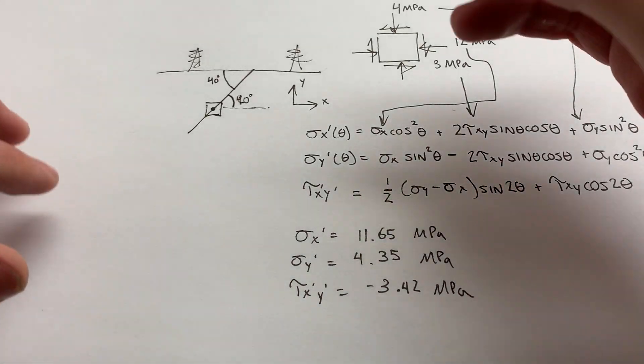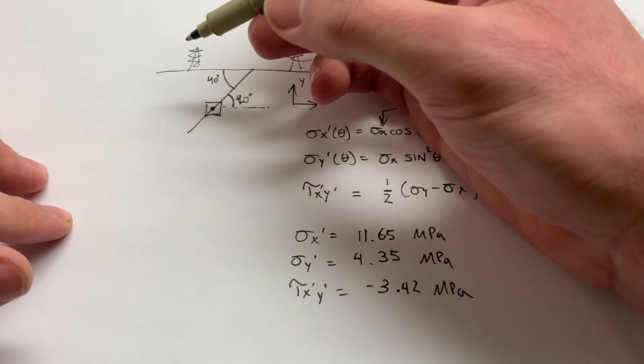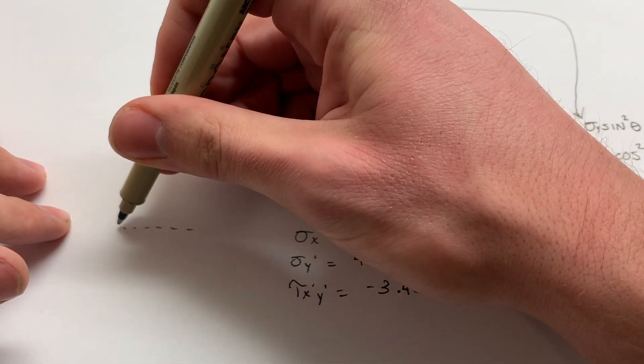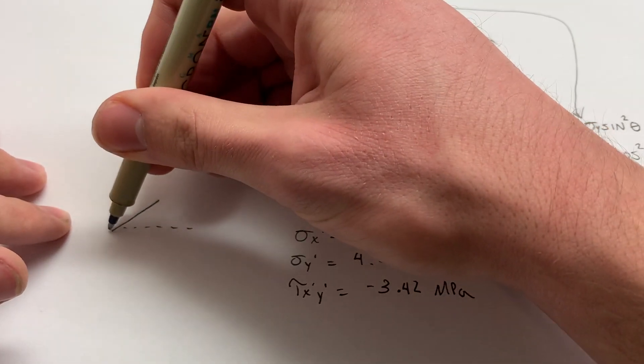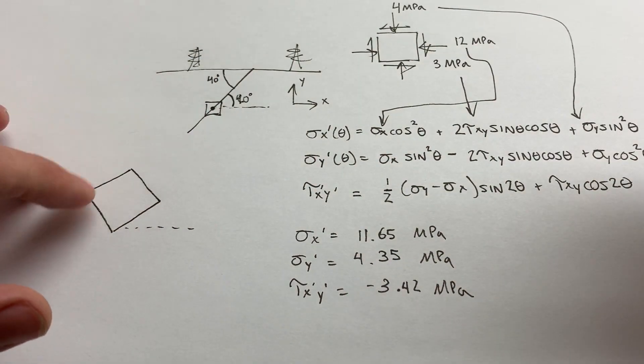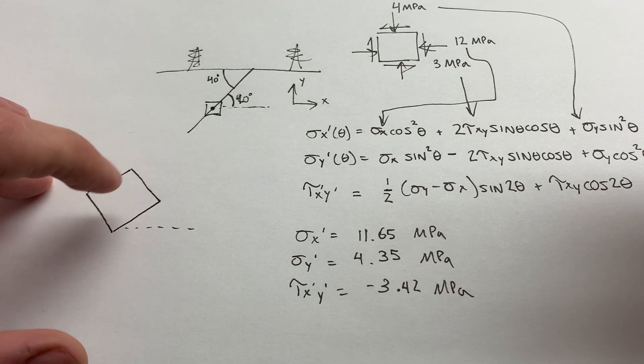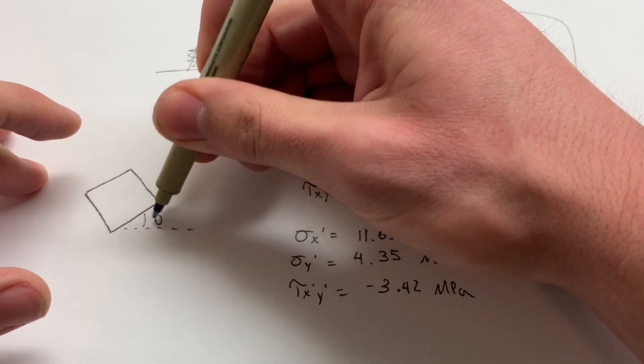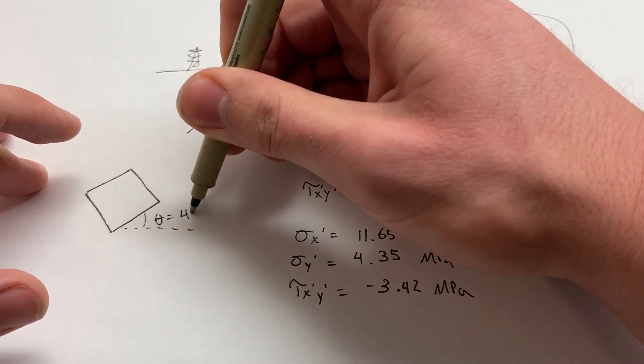And now we can finally draw our new stress state. We can show that it has been rotated 40 degrees if we have a little bar there. Maybe this new, that's our new face there. So if that was... So we have to think a little bit here. It's been rotated theta, which is equal to 40 degrees.